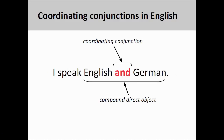As the first two elements of the second sentence are the same, we could merge the two sentences into one by removing the redundant elements and joining the direct objects with a coordinating conjunction, 'and.' This creates the compound direct object you see on the screen.